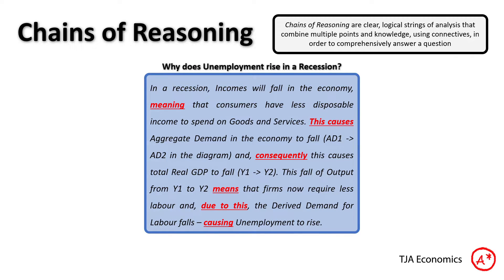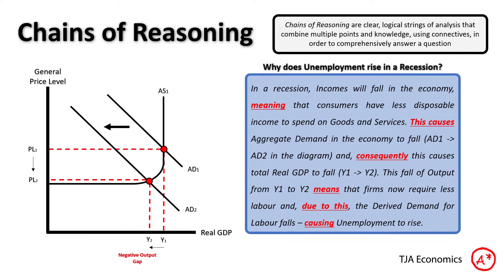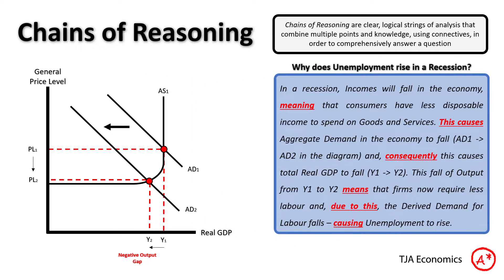Why does unemployment rise in a recession? In a recession, incomes will fall in the economy, meaning that consumers have less disposable income to spend on goods and services. This causes aggregate demand in the economy to fall. Notice what I've done here though — I've referred to specific points on a diagram. That's super important in your essays. This causes aggregate demand to fall, AD1 to AD2, and consequently this causes total real GDP to fall, Y1 to Y2.